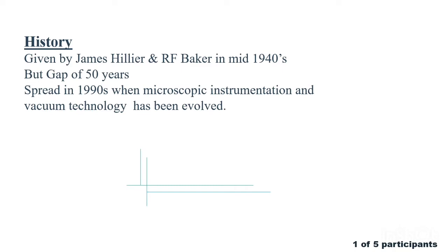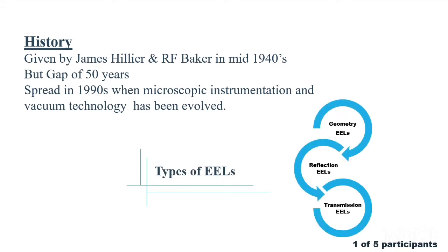The types of electron energy loss spectroscopy include three: geometry, reflection, and transmission electron energy loss spectroscopy. The transmission type also includes valence electron energy loss spectroscopy, which is most widely used nowadays because the beam of electrons is passed directly through the sample rather than reflection or geometry.